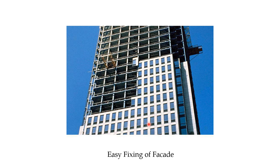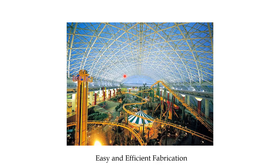Easy fixing of facade — facade means the exterior covering or cladding applied to cover the structural members. You can easily connect or weld cladding to existing members. Another advantage is easy and efficient fabrication: if you imagine building a large-span structure in concrete, you would need heavy slabs, heavy beams, and a lot of labor and machinery. But with steel structures we can achieve large spans efficiently.